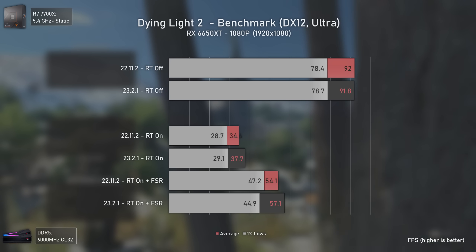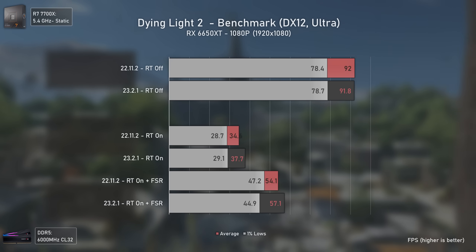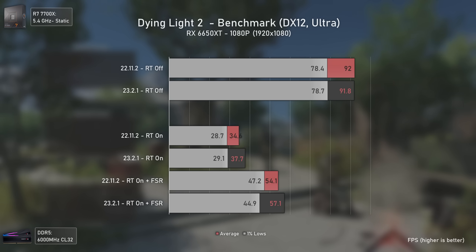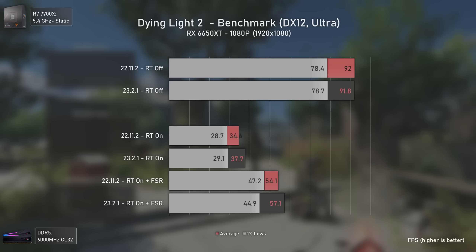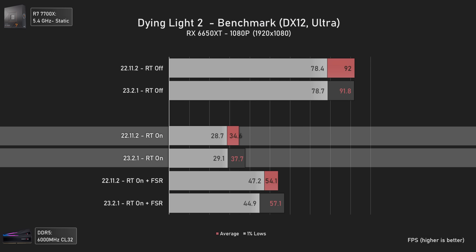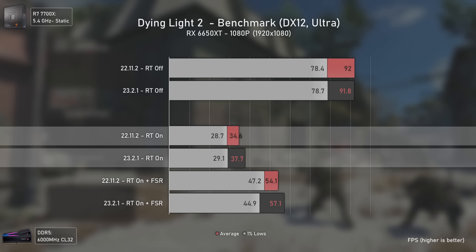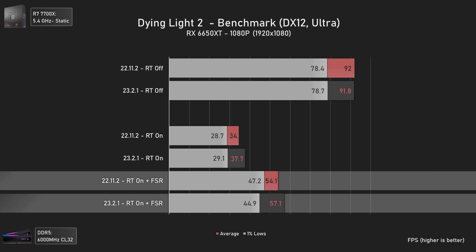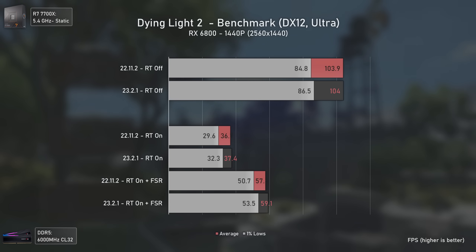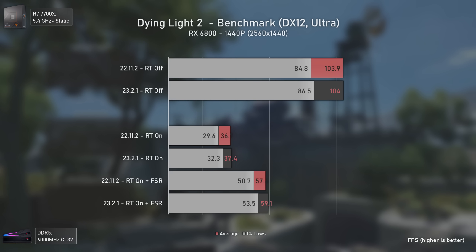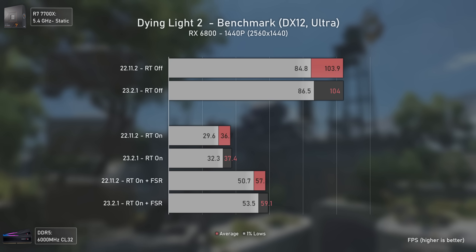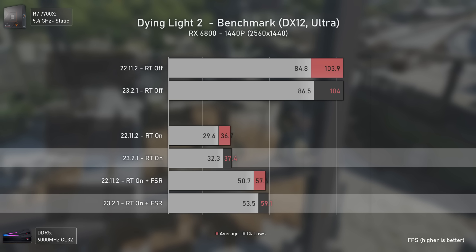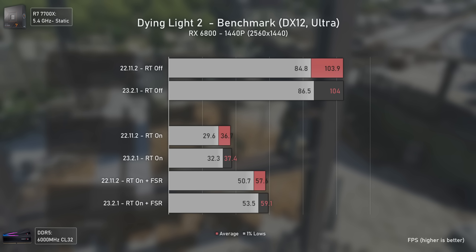On Dying Light 2, since ray tracing heavily impacts FPS, I included FSR 2 in the mix as well. At 1080p, the RX 6650 XT had identical rasterization results but a performance increase with ray tracing, going from 34 to 37 FPS — around 8.8%. That increase drops to 5.5% with FSR, possibly due to the upscaling algorithm. With the RX 6800, results are similar, with the biggest ray tracing improvement in the 1% lows: 9% without FSR and 5.5% with it — in line with the 6650 XT.